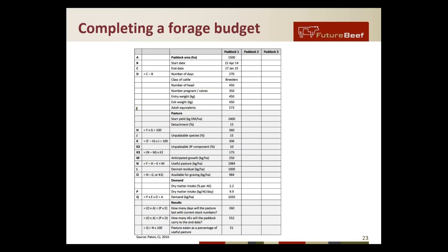Lastly, calculate the results. These will tell you how many days the feed will last with the current numbers of AEs you want to run — for example, we wanted to run 573 AE and it would last 260 days. Alternatively it can tell you the number of AEs you could run until the end date — in this example it said we could run 552, but we wanted to run 573, so we're a little over what it's suggesting. It also tells you the amount eaten as a percentage of useful pasture — I'll come back to that in a moment.